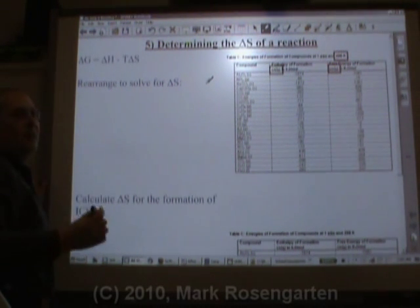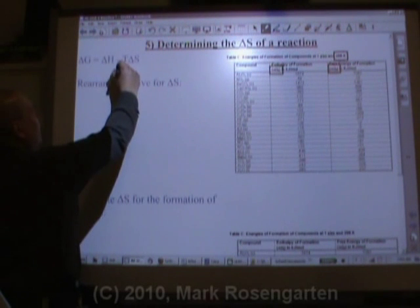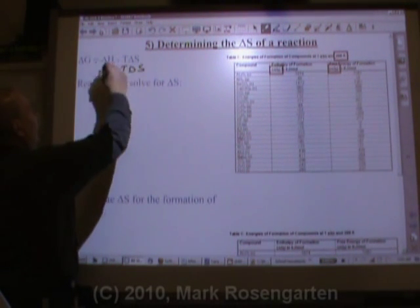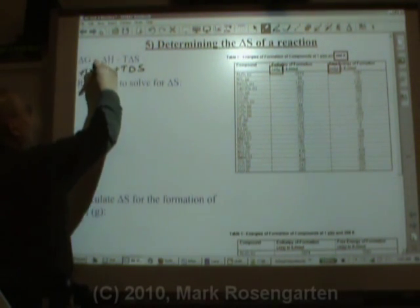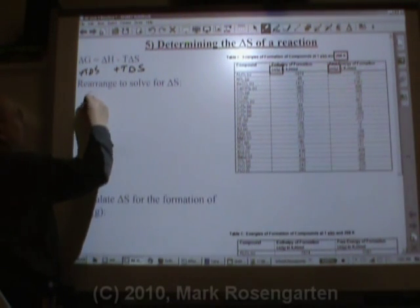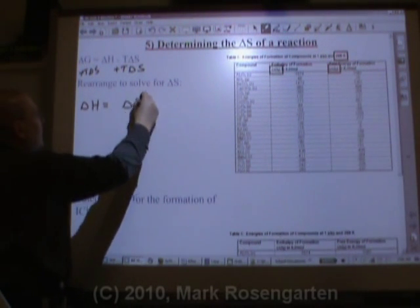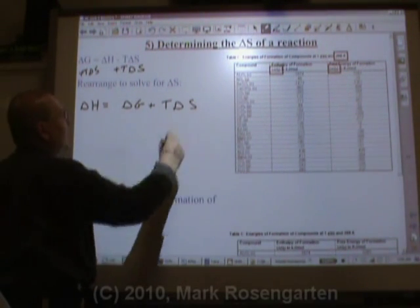But you see that negative sign? That makes it difficult. So what we're going to do is add T delta S to both sides. And we're going to get delta H equals delta G plus T delta S.